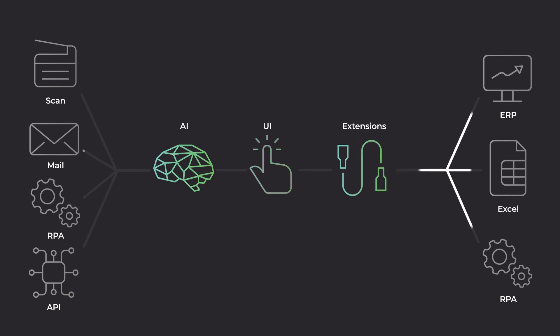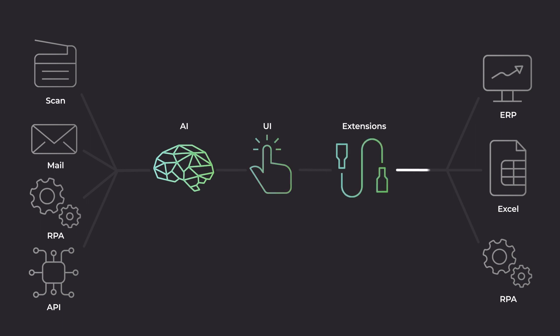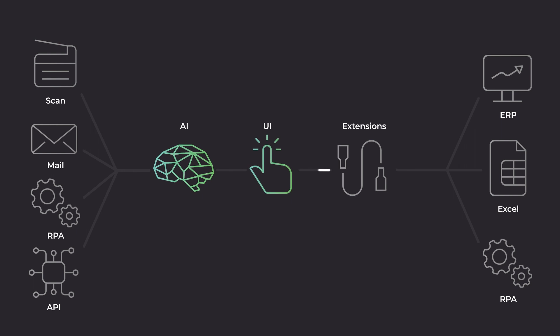Here's how Rawsome works. First, import your invoices. Our AI will process them in seconds — no templates, no costs. After that, you can validate and export the data into your preferred system.